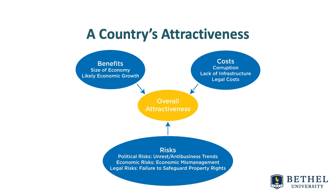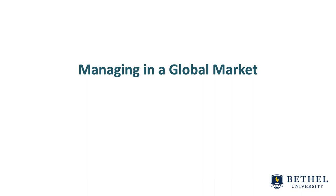Countries that are highly attractive have higher sustained rates of economic growth due to democratic regimes, market-based economy policies, and strong property rights protection. The overall attractiveness of a potential market to international business depends on balancing the benefits, costs, and risks of doing business in that country. The benefit-cost-risk trade-off is most favorable in politically stable developed and developing nations with freer market systems and no dramatic upsurge in inflation rates or private sector debt. All of these concepts play an important role in determining the attractiveness of a foreign market.